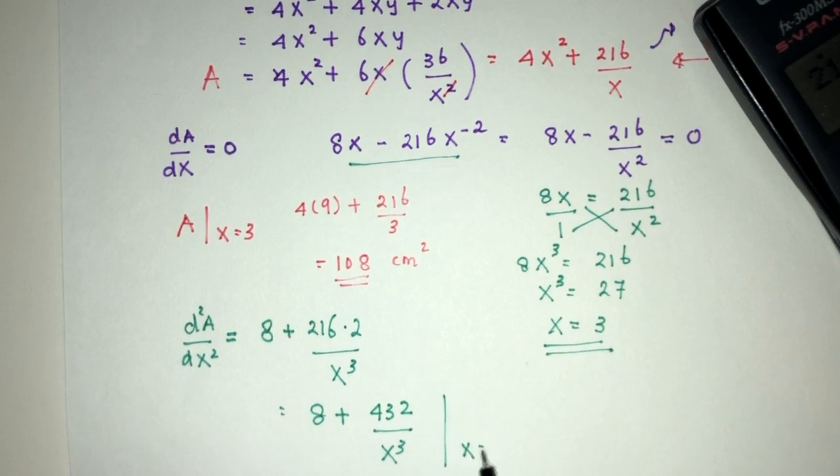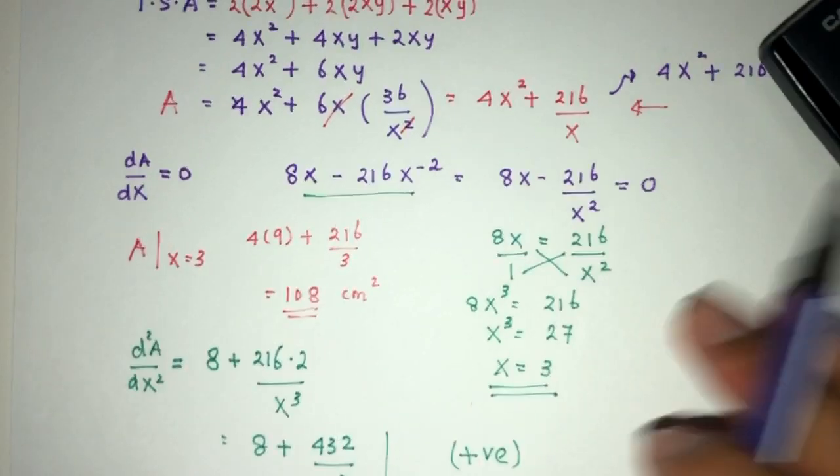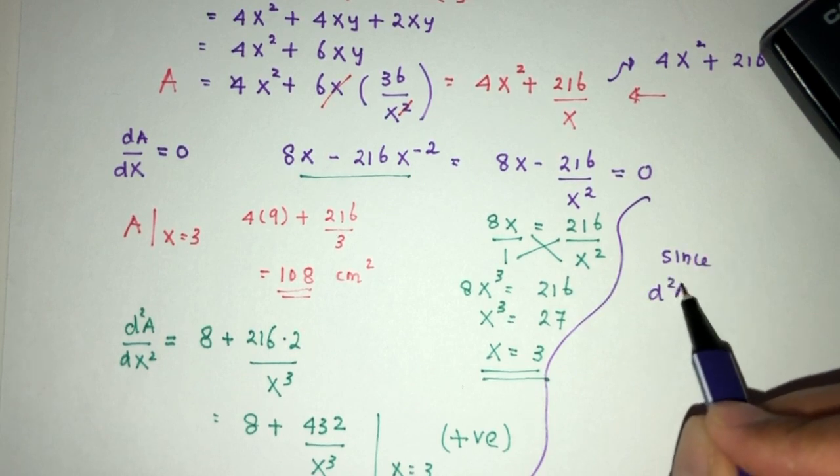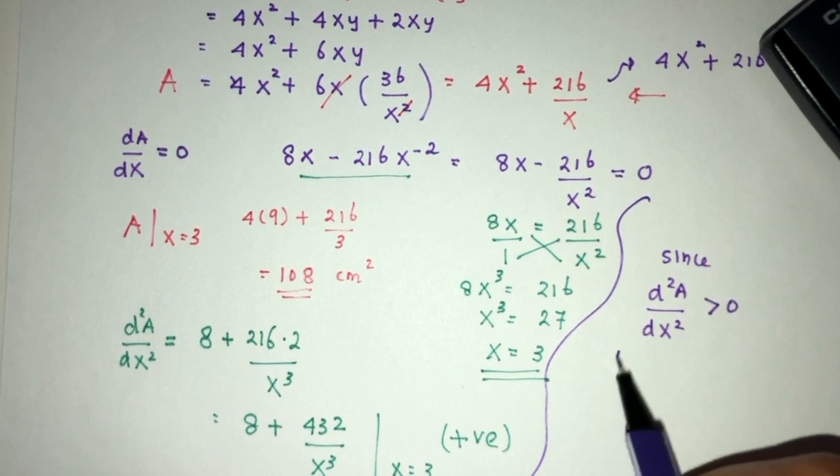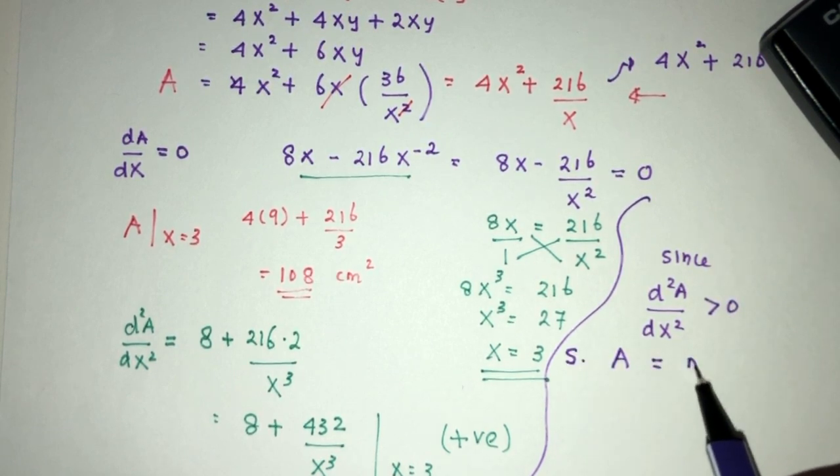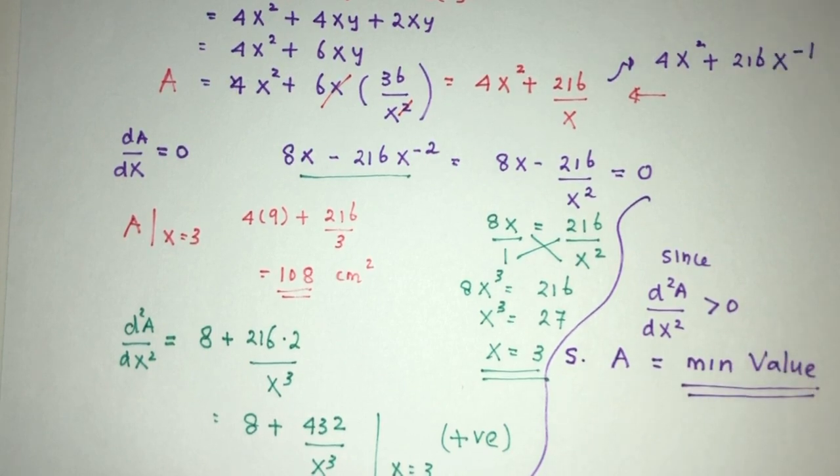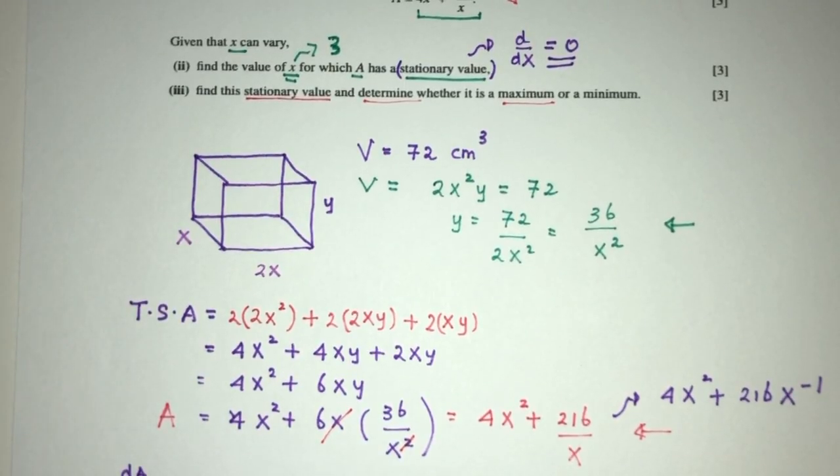So when the value of x is 3, you can see this will be a positive value. This is all we care about here, we care about the sign of this value. Now you can write, since d²A by dx² is positive, we realize that the stationary value of A is equal to a minimum value. Okay, and that will be it. Question we have regarding differentiation and finding stationary values.